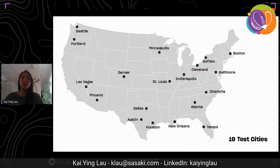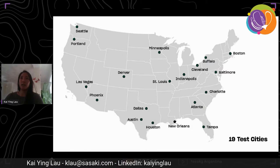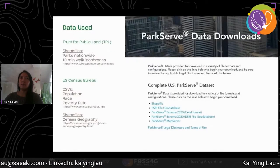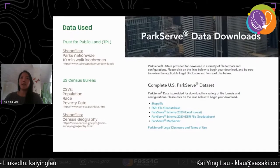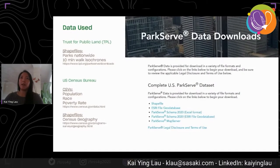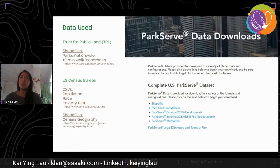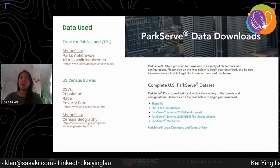We tested this methodology on 19 cities across the US. The data we used is from TPL — they have a nationwide parks dataset as well as 10-minute walk isochrones for each of those parks. We also used demographic data from the US Census Bureau.